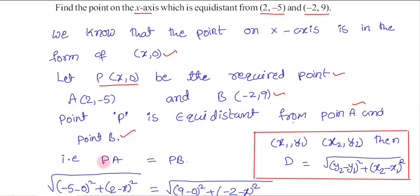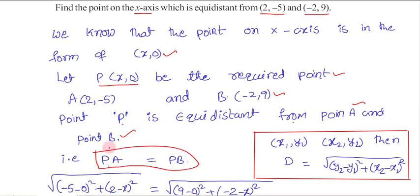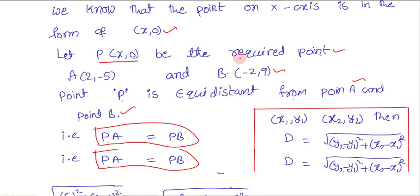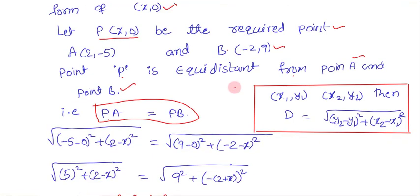That means the distance between P and A, that is PA, is equal to the distance between P and B, that is PB. So PA equals PB. This is the key equation for solving this problem, and I am going to make use of the distance formula.